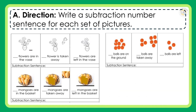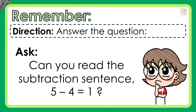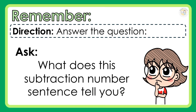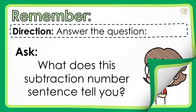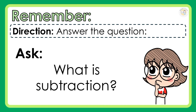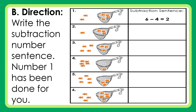Direction: Write a subtraction number sentence for each set of pictures. Direction: Write a subtraction sentence for each picture. Can you read the subtraction sentence? 5 minus 4 is equal to 1. What does this subtraction number sentence tell you? What do you call this process? What is subtraction? Direction: Match the picture with the correct subtraction number sentence. Direction: Write a subtraction number sentence. Number 1 has been done for you.